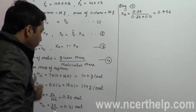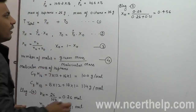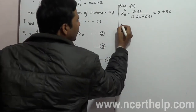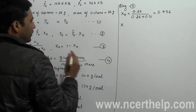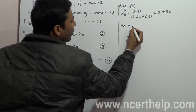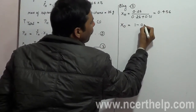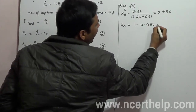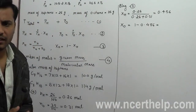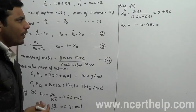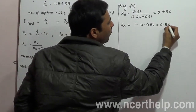Molar fraction of octane equals 1 minus 0.456, and after calculation we get 0.544.